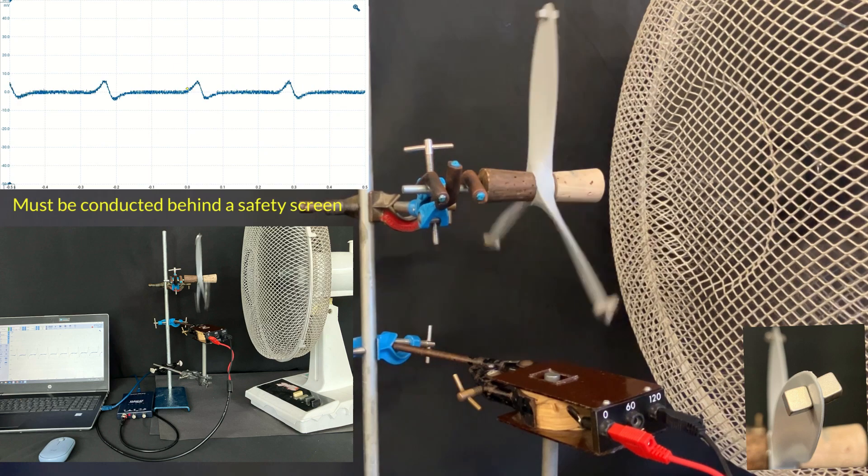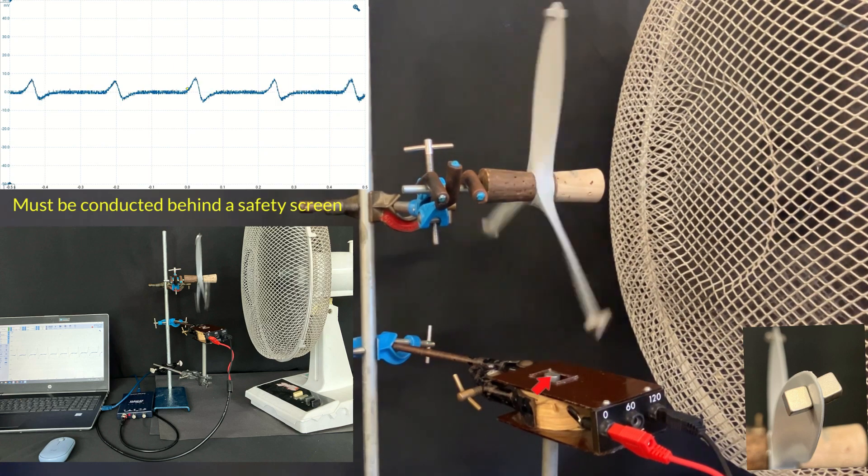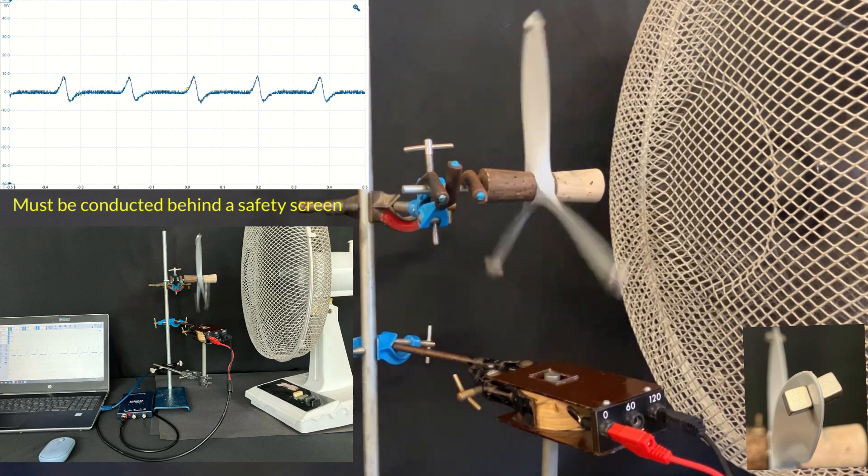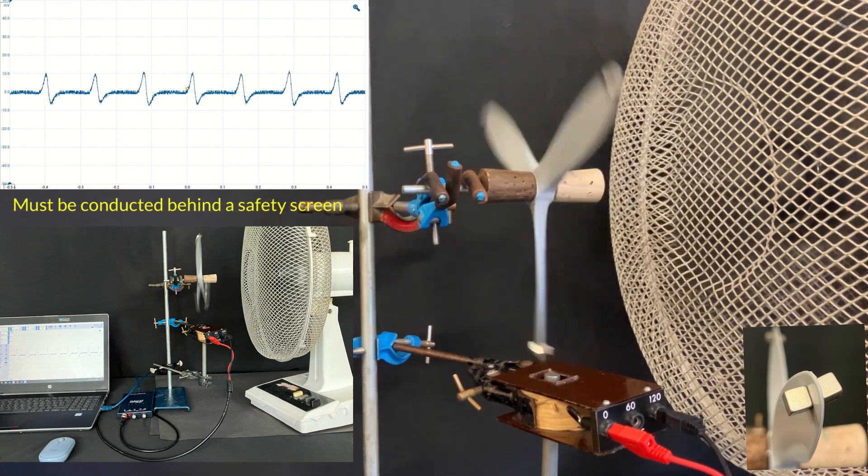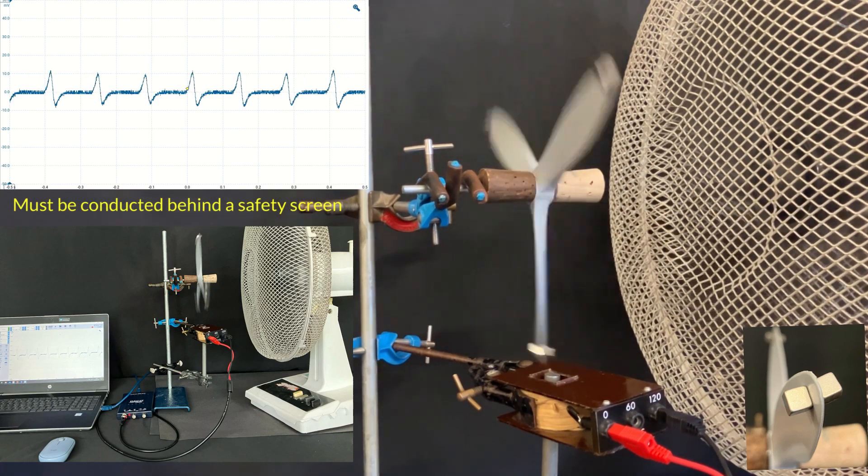This means that the magnets pass over the coil, which has got an iron core, and because the magnetic field around the coil is changing, then we get an induced potential difference across the coil.